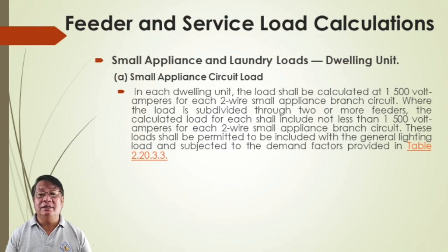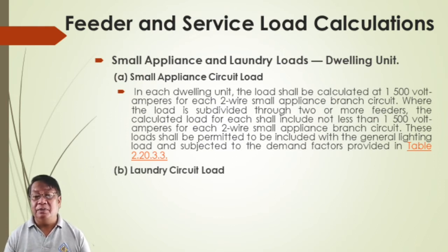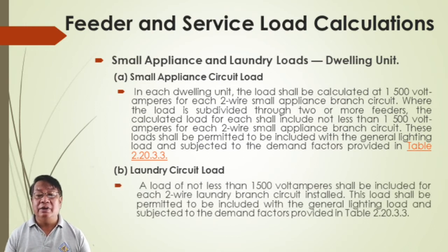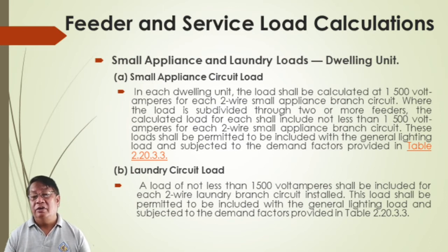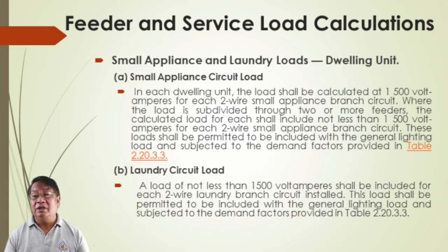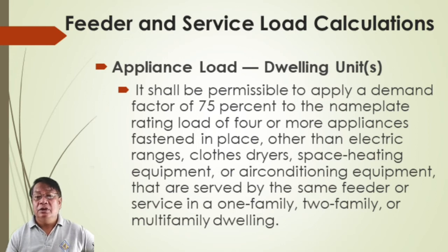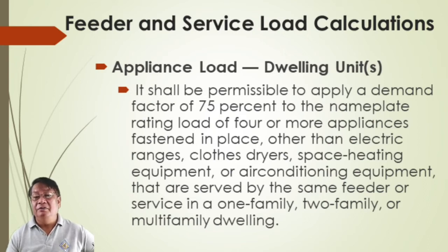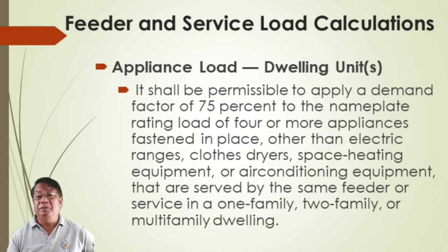For small appliance laundry, going back to Table 2.20.3.3, for the laundry circuit, try to allocate 1,500 volt-amperes for each two-wire laundry branch circuit. A demand factor of 75% shall be permitted to be applied for appliance loads of the nameplate rating for four or more appliances fastened in place, other than electric ranges, clothes dryers, and space heating — which have different demand factors.